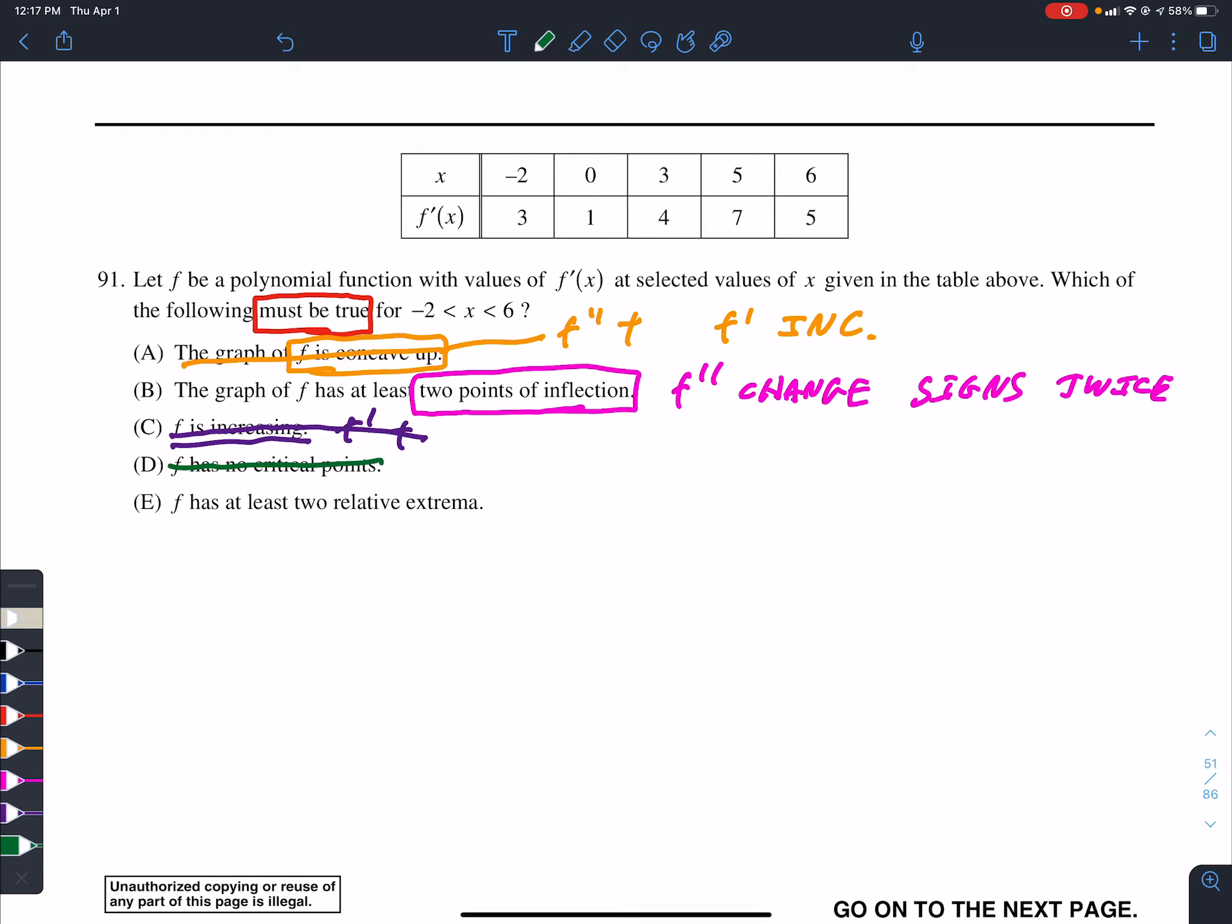At least two relative extrema. Must it have at least two relative extrema? A relative extrema could be relative max or relative min. That means the derivative has to change from positive negative or negative positive. Does that have to happen in this situation? No, because if you look, it's always positive. Now, it might have two relative extrema. Now, if this were negative, then it would have at least two. Because it went from positive to negative at some point between those. And then from negative to positive, so at some point it had to change signs. But we don't have any negatives there, so that doesn't have to be true. So by default, it's going to be B, but let's see why this is true.